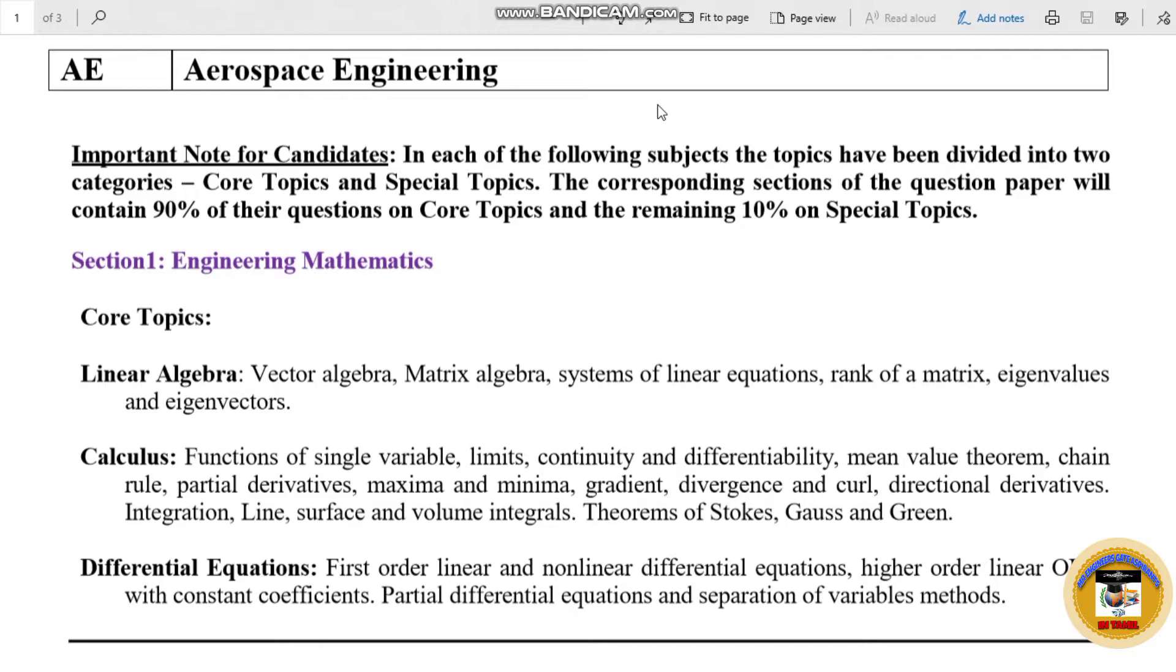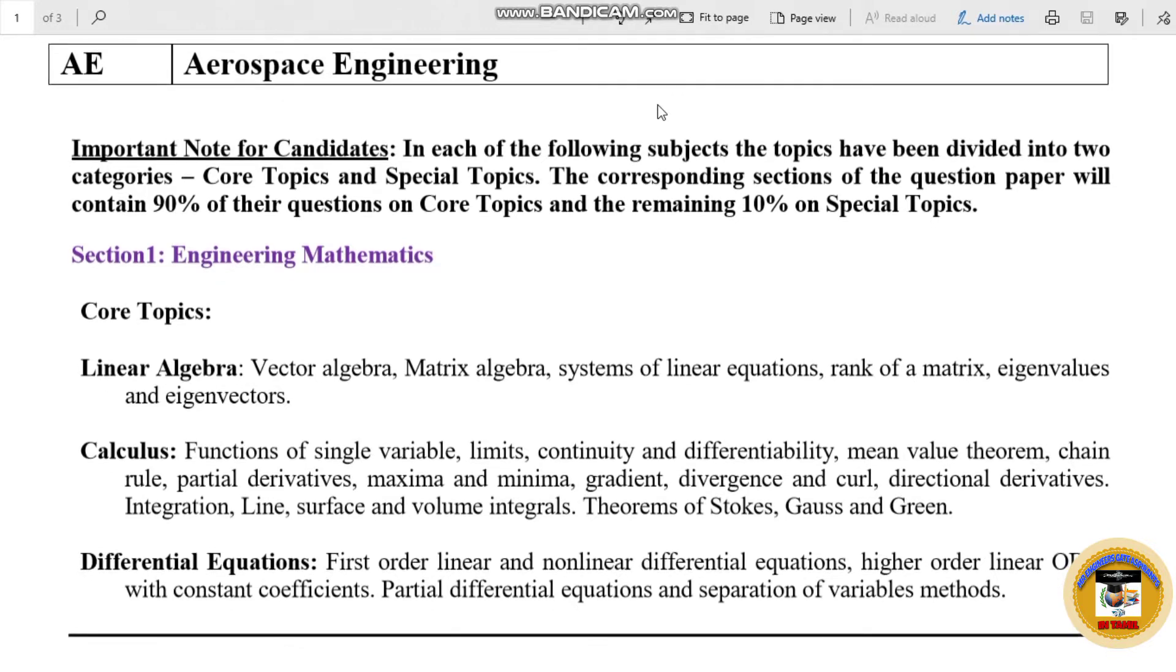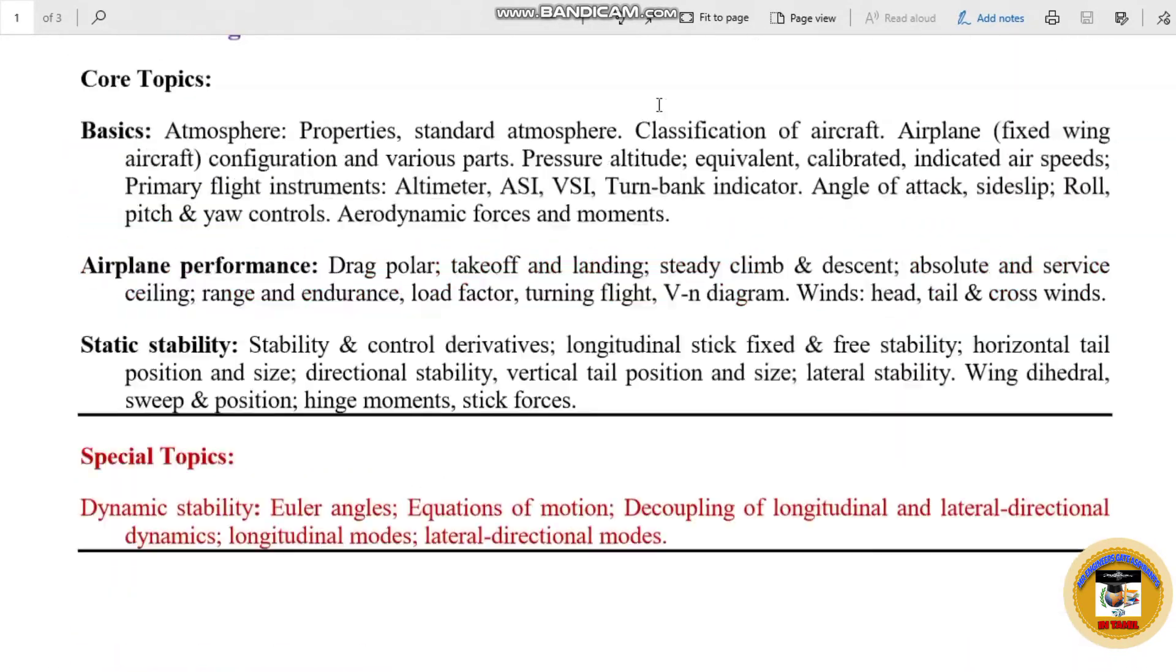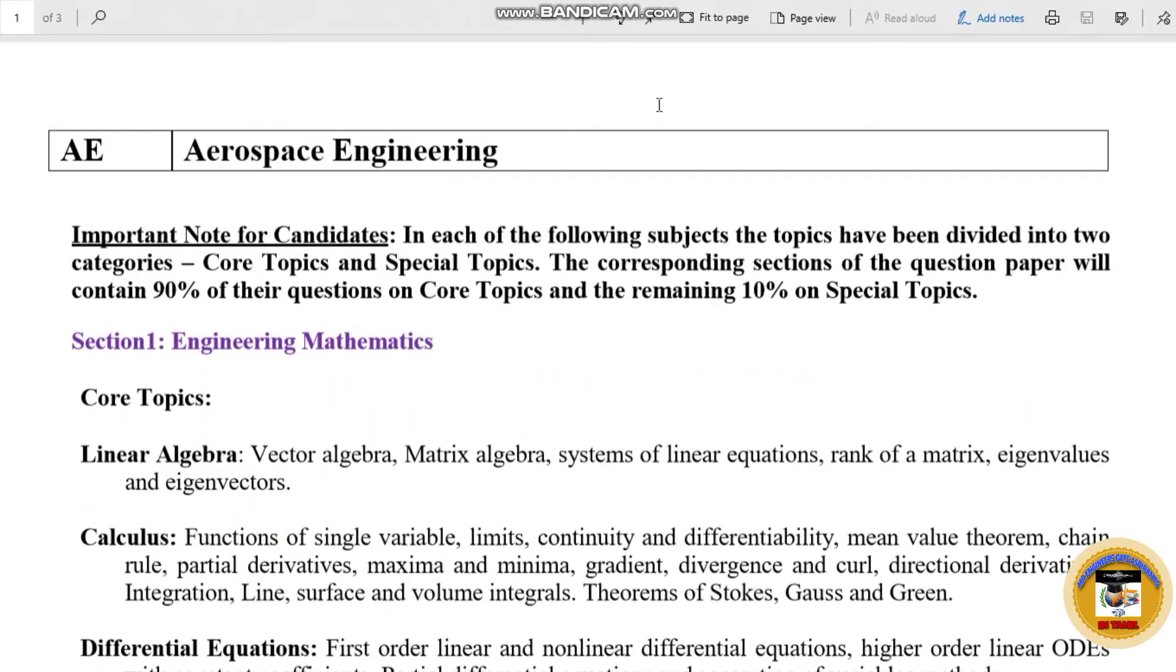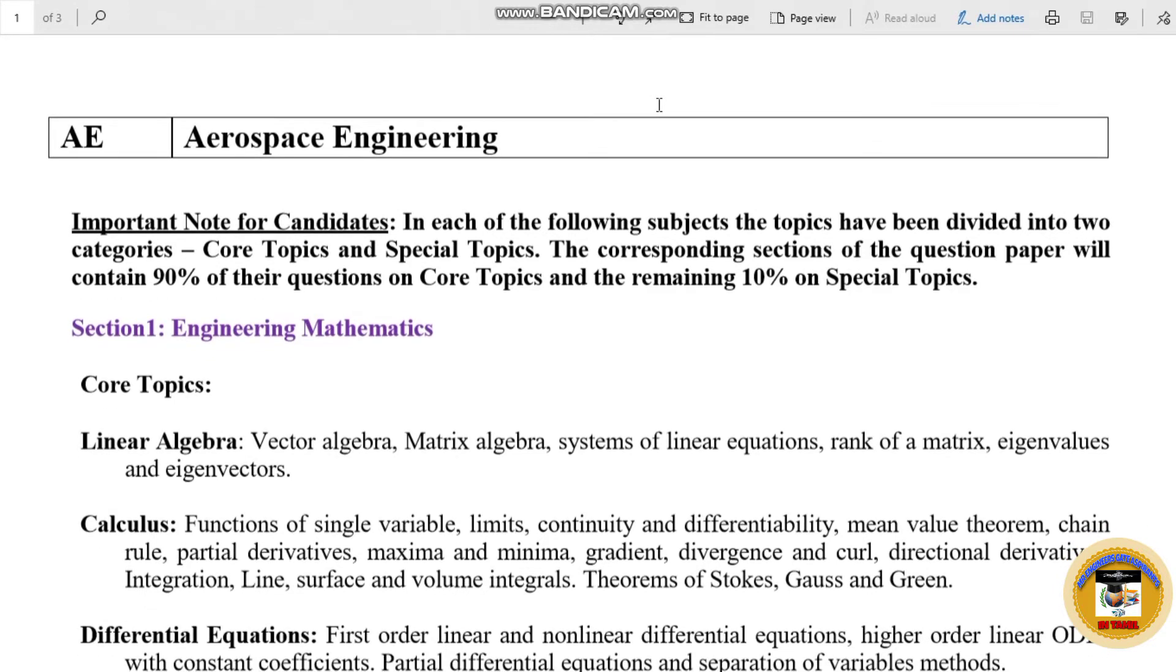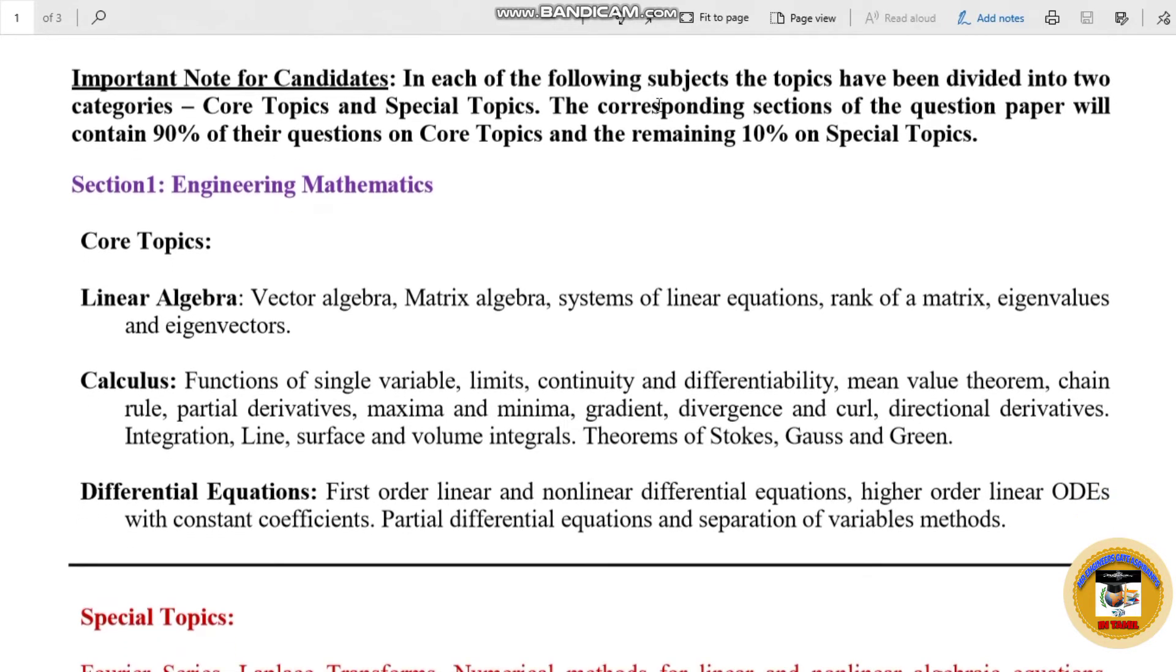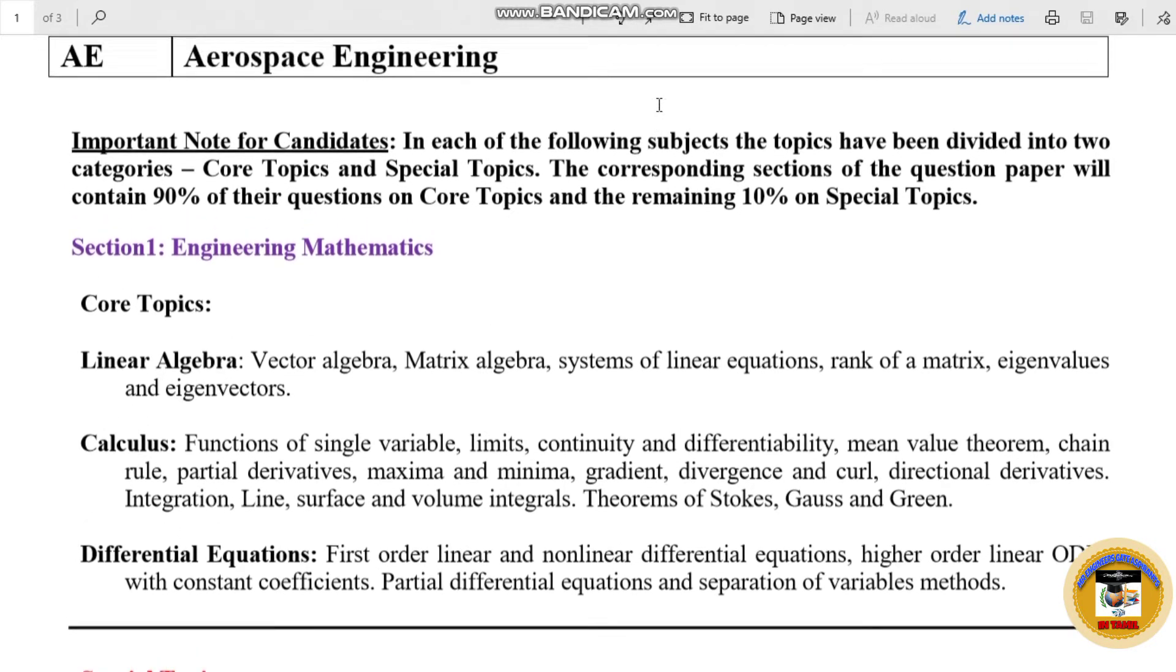There are six sections in Aerospace Engineering. Section 1 is Engineering Mathematics. Let's talk about sections. Aerospace Engineering is an important topic. There are two categories: core topics and special topics. There are 90% of these core topics and 10% special topics questions.